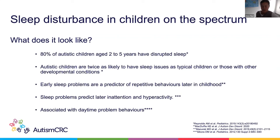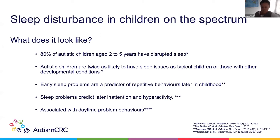So children on the spectrum are at high risk for sleep problems. Early sleep problems have been identified as a predictor of later repetitive behaviours in childhood and also later inattention and hyperactivity. There have been many studies identifying associations with daytime problem behaviours, and if children aren't getting enough sleep, over time it may lead to long-term consequences on their health and overall physical wellbeing.